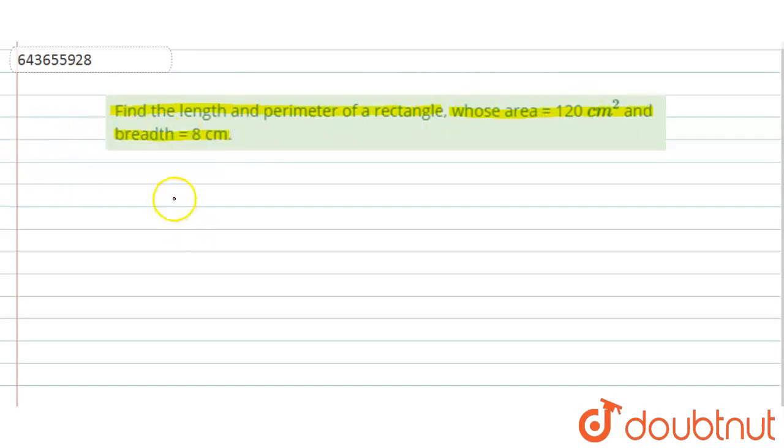So first of all, let us use the area of rectangle formula. Area of rectangle is equal to length into breadth. So area is already given to us: 120 centimeter square equals length into breadth, and breadth is already given to us. So l into 8.